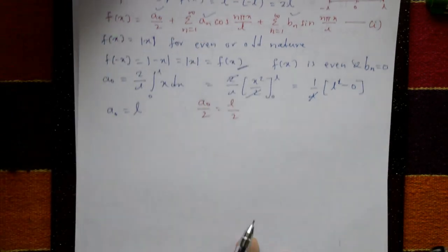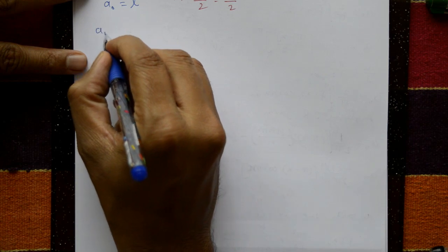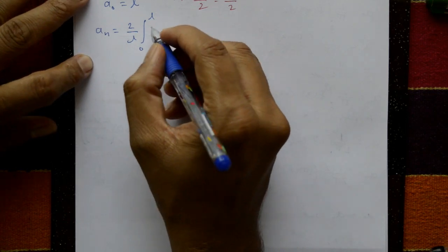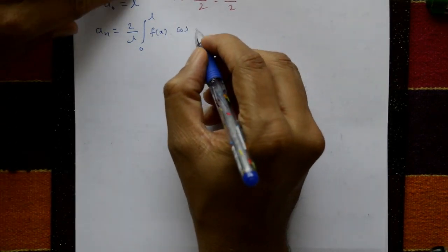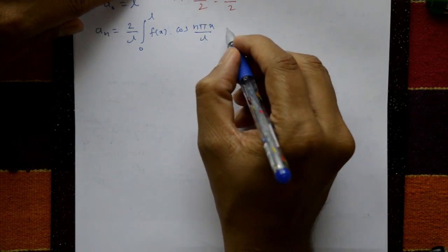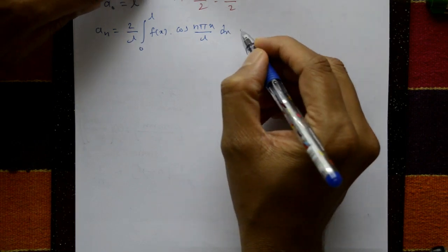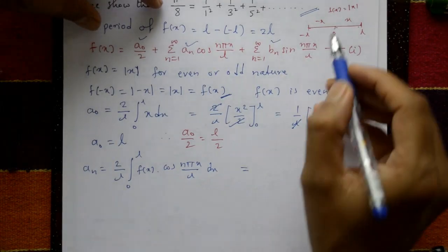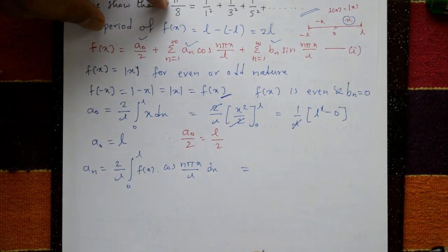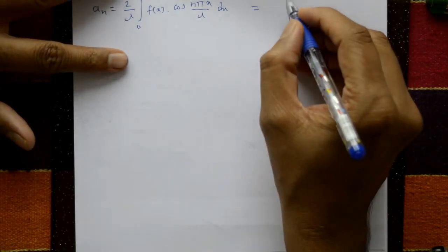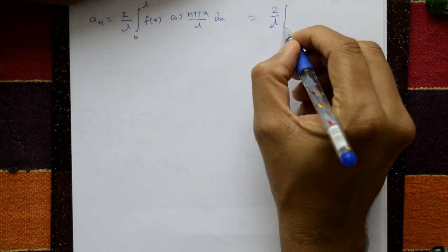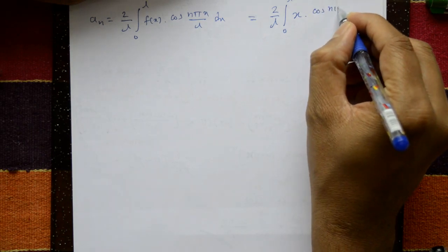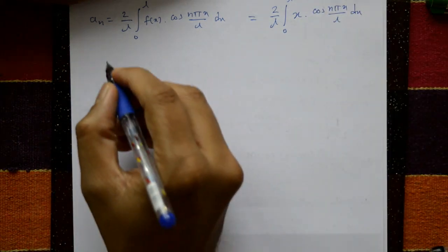Next compute aₙ. aₙ = (2/l) integral from 0 to l of f(x) cos(nπx/l) dx. On the limit 0 to l, f(x) = x. So aₙ = (2/l) integral from 0 to l of x cos(nπx/l) dx. Now we apply Bernoulli's rule.